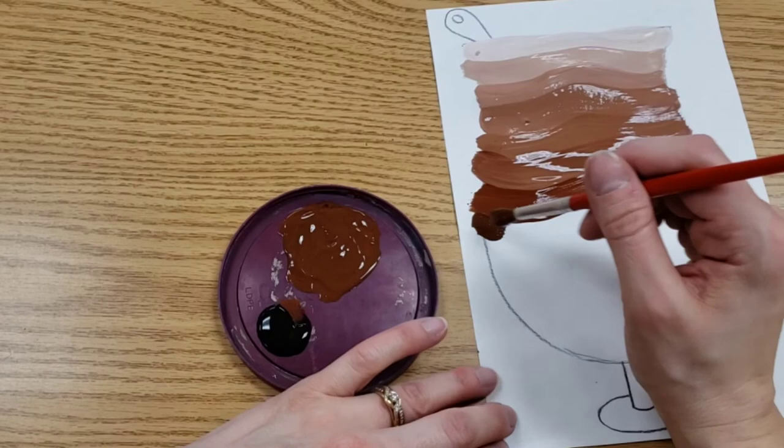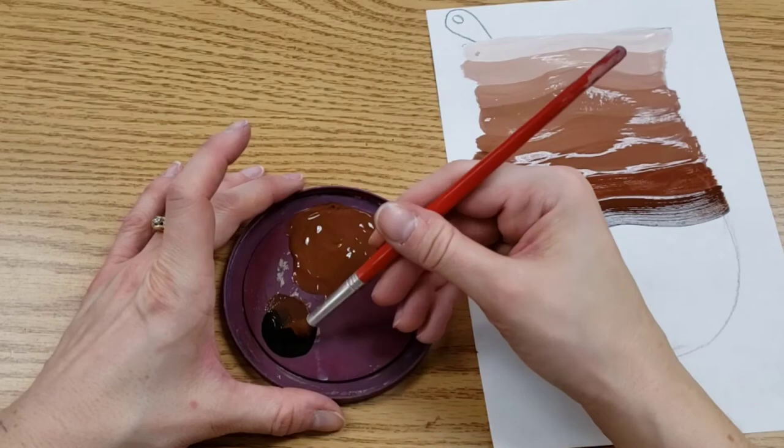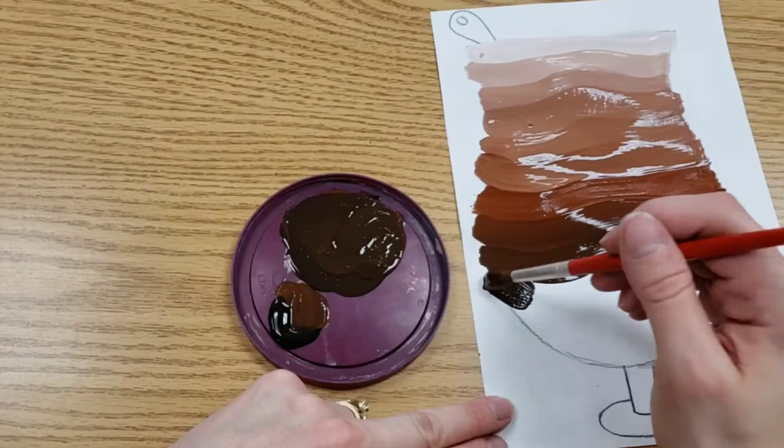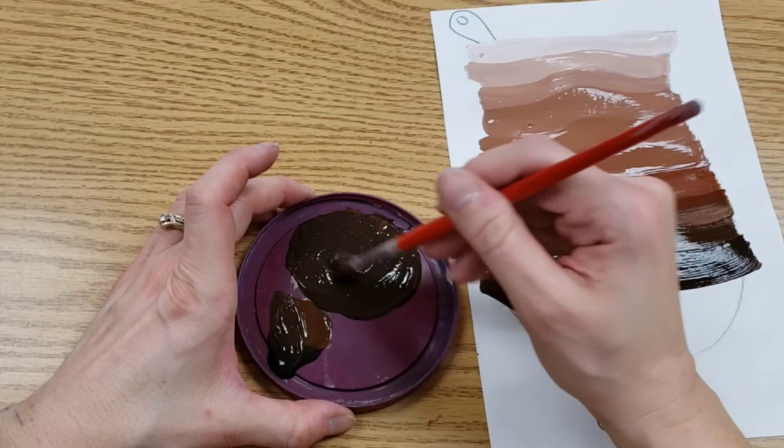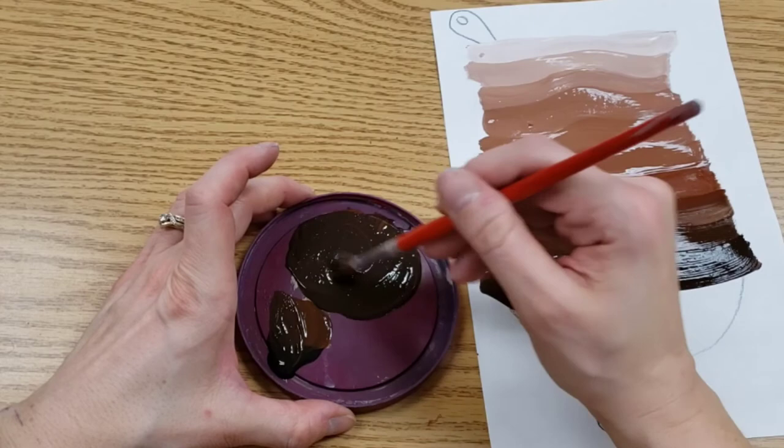And as we did before, you mix completely so the lighter color is gone. And repeat. Now, we don't want the bottom to be totally black. So you're going to stop before it gets to that point. If you have a lot of room left, just keep painting in the same pattern that you had going.